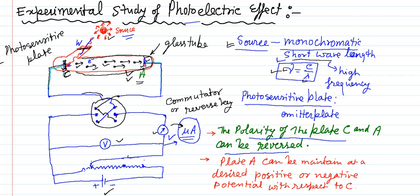So this is photosensitive plate emitter, we are saying this one is the photosensitive plate. And the second point which we are saying is that plate A, that is the collector, can be maintained at a high desired positive or negative potential with respect to the C. C is cathode, A is anode. So you can keep the A negative or positive, it depends on you.